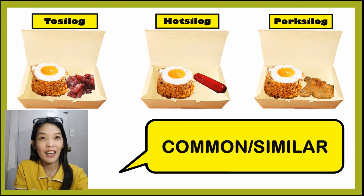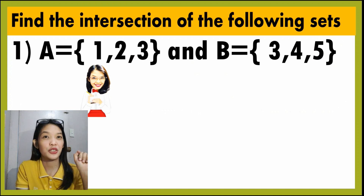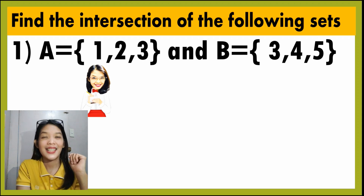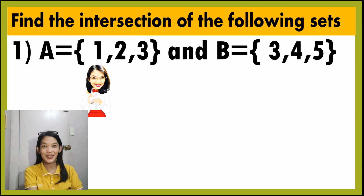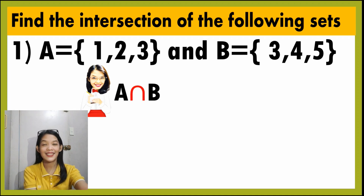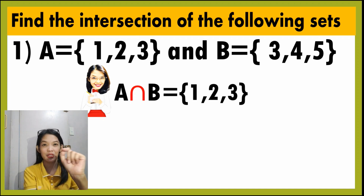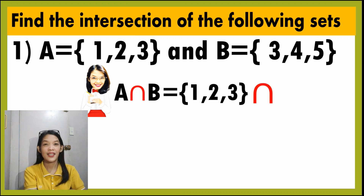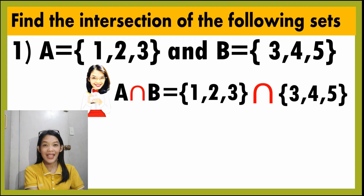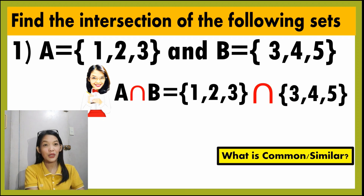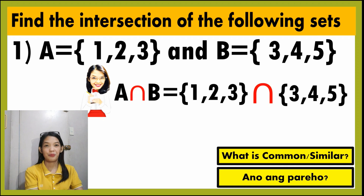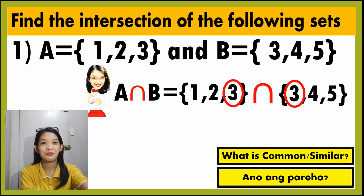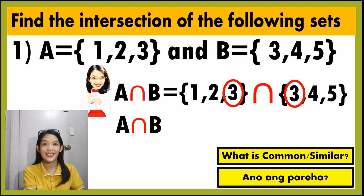To understand it further, let us have specific examples. Find the intersection of the following sets. For number 1, set A has the elements 1, 2, and 3, and set B has the elements 3, 4, and 5. To get the intersection of A and B, we must list the elements of A, which are 1, 2, and 3, then the symbol for the intersection, then the elements of B, which are 3, 4, and 5. To get the intersection, we need to find what is common — what is similar. And therefore, the intersection of A and B is 3.